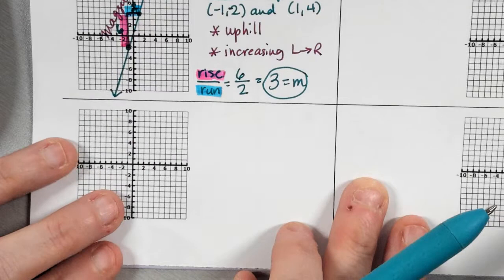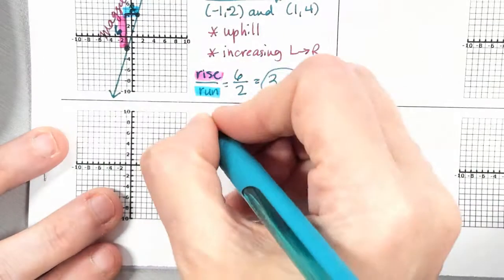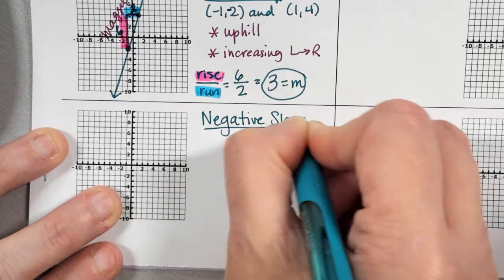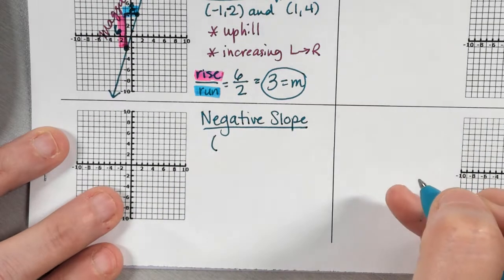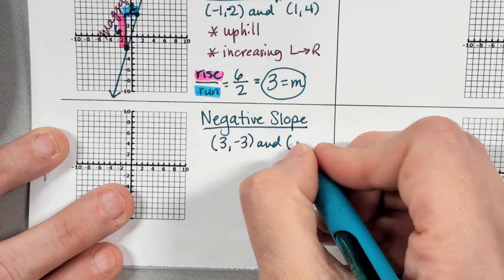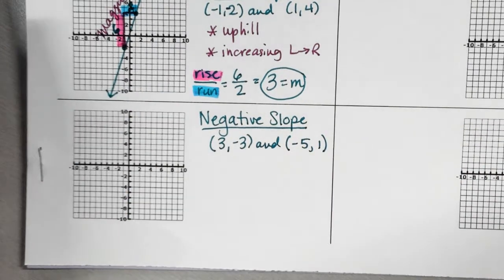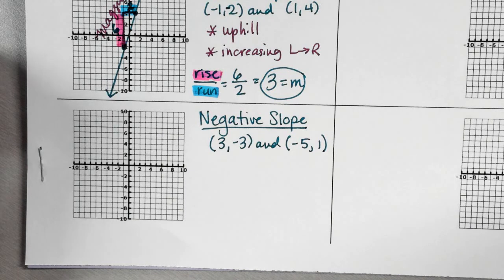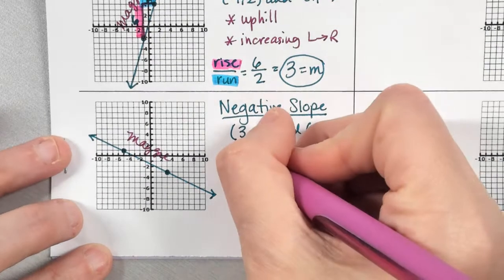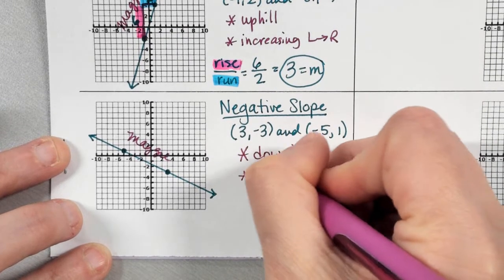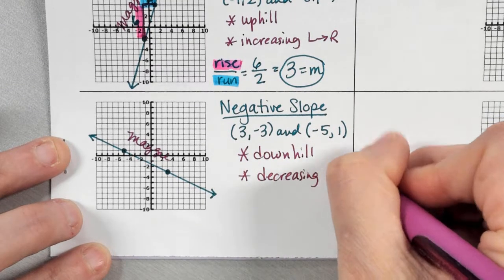If this was positive slope, what do you think the next one's going to be? Negative slope. I want you to plot these two points: three, negative three and negative five, one. Do the first three steps — plot the points, draw the line, sign the line. This is negative slope — it's going downhill, or decreasing from left to right.